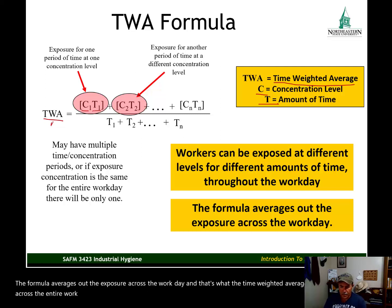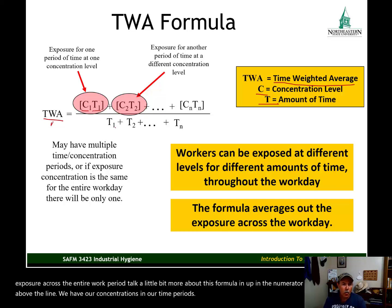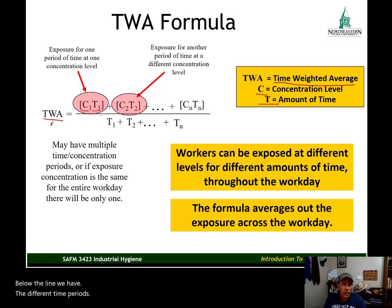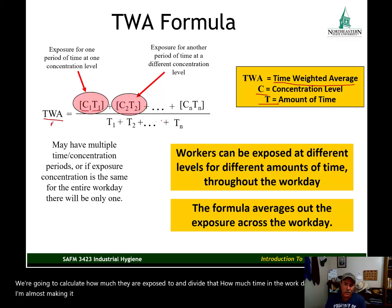In the numerator — the part of the formula above the line — we have our concentrations and our time periods. Below the line, we have the different time periods. So we're going to calculate how much they're exposed to and divide that by how much time in the workday. It's really simple. I think the best thing to do is just look at a sample problem.